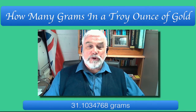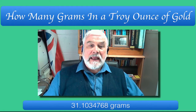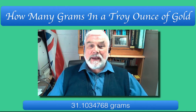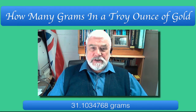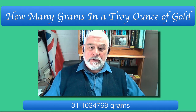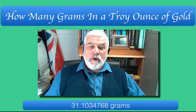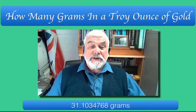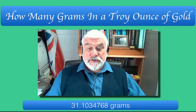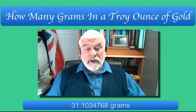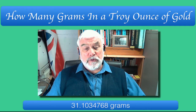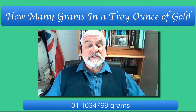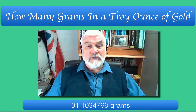Hi, I'm Roger Bicknell and you have just clicked on how many grams in a troy ounce of gold. I've placed the answer at the bottom of the page. It's 31.1034768 grams.